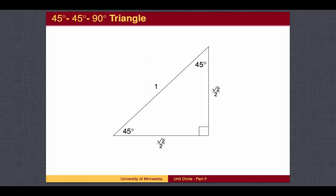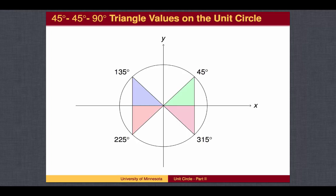The 45-45-90 triangle has two legs, each with length square root of 2 over 2. We can use this triangle to find the x and y coordinates of the points associated with 45 degrees, 135 degrees, 225 degrees, and 315 degrees. The standard is to always place one leg of the triangle on the x-axis.